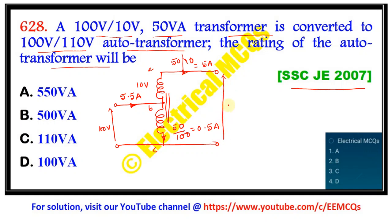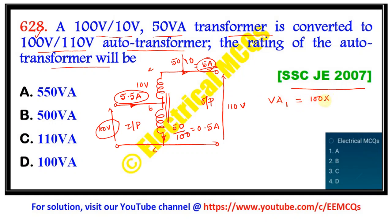The output voltage is 110 volts and the maximum current going to the load is 5 ampere. From the input side, the input voltage is 100 volts and the current that can be drawn is 5.5 ampere. The volt ampere from the primary side is 100 into 5.5, that is 550 volt ampere. From the output, it is also 110 into 5, which is equal to 550 volt ampere.